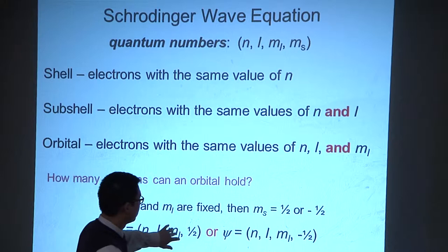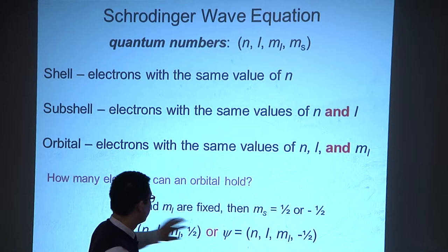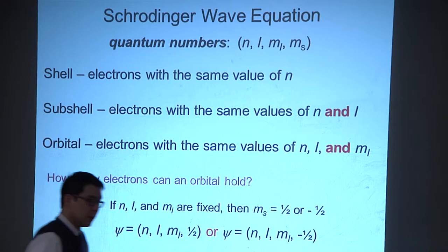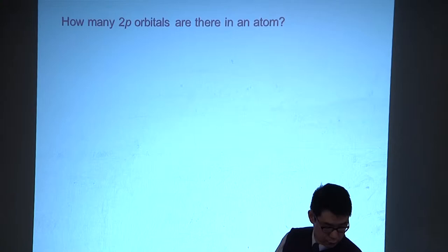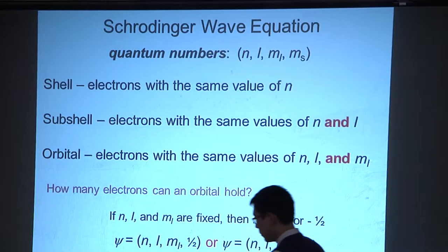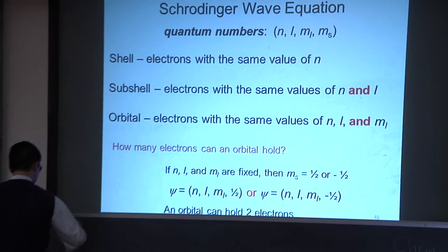Another way of representing this: the wave function has four quantum numbers — n, l, m sub l, plus one-half — and n, l, m sub l, minus one-half. If the n's, l's, and m sub l's are all the same, we say they're the same orbital. Let's reason through this a bit.